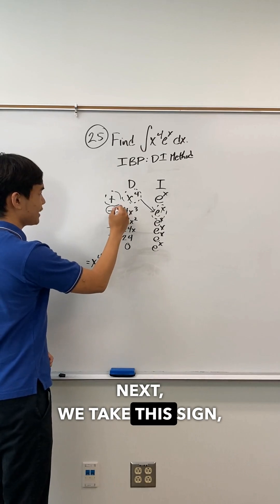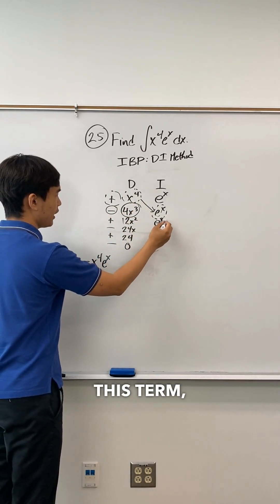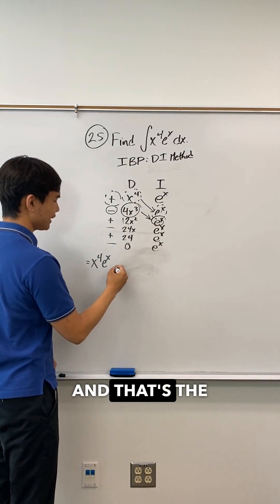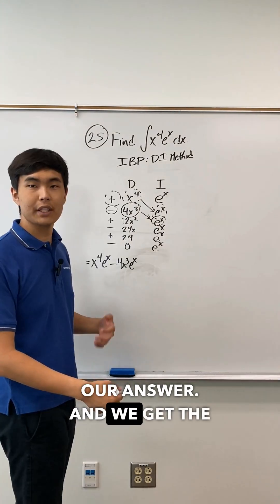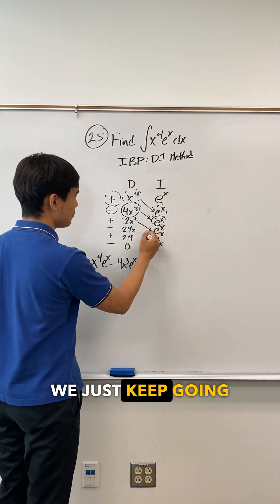Now to get to the next, we take this sign, this term, and this term. We multiply all these together, and that's the second term of our answer. And we get the rest of the terms a similar way. We just keep going diagonal.